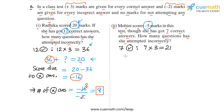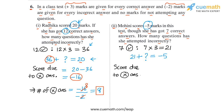How do we calculate the score due to incorrect answers? The score due to correct answers is 7 into 3, which is 21. So 21 plus the score due to incorrect answers equals the total score of minus 5. From here, Mohini's score due to incorrect answers is minus 5 minus 21, which equals minus 26. So Mohini obtained 21 marks from correct answers and minus 26 marks from incorrect answers, and 21 plus (minus 26) gives minus 5.